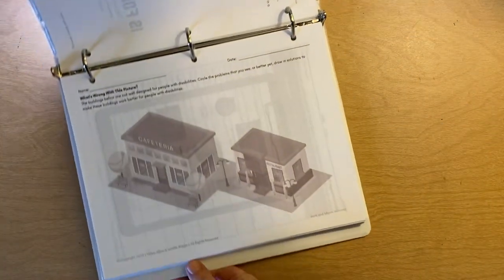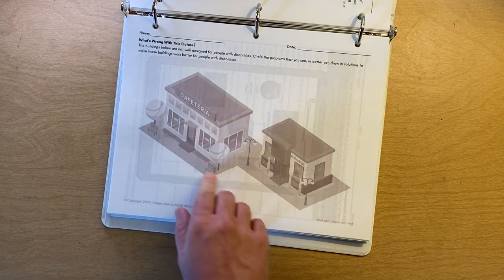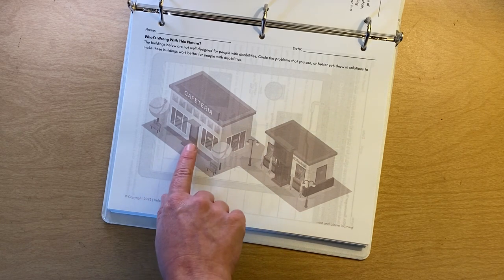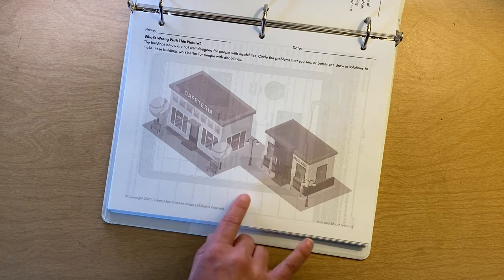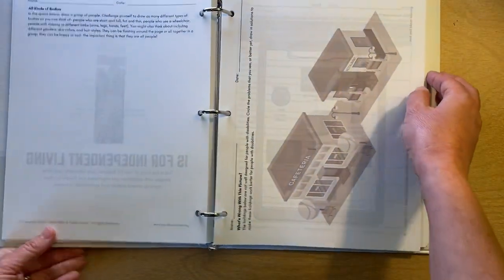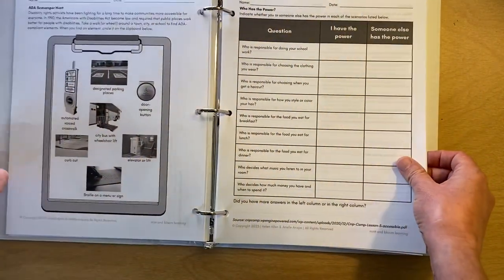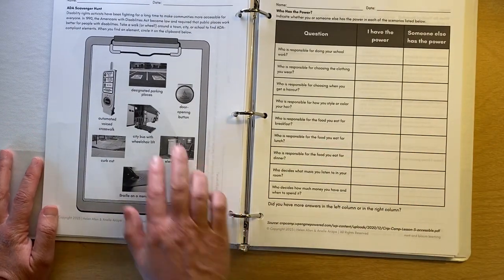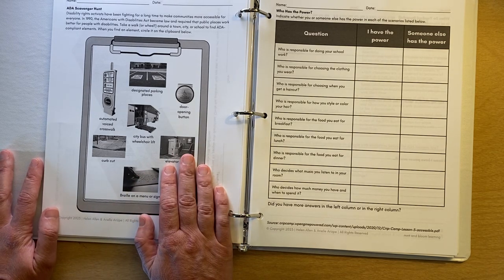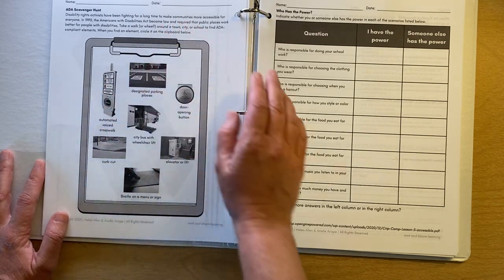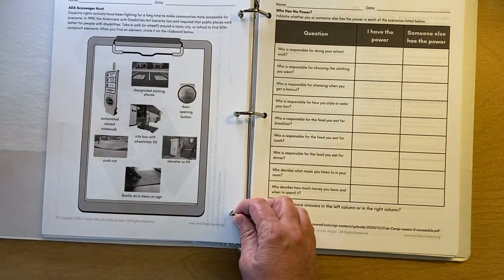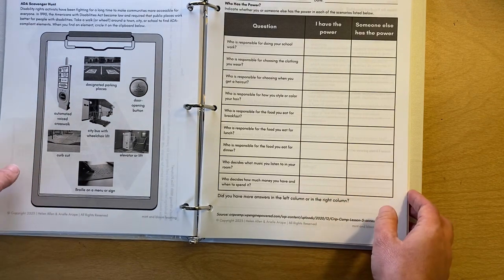This one is what's wrong with this picture. So we show you a couple of buildings and think about them from their perspective of people with disabilities. How would they, what obstacles would they encounter if they tried to access these spaces and how could you fix them? Yeah. This is a scavenger hunt idea looking for things that were introduced in the ADA. And so you will need to actually get out and move around, take a walk or a wheel around your town or city or school or some area close to you and see if you can find these things and see if they're working because that's important too.